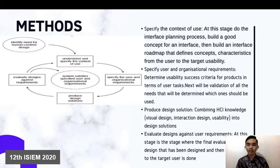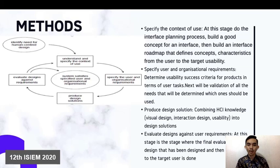Next, validation of all identified needs will be determined. The third step is the product design solution, which combines HCI knowledge, visual design, interaction design, and usability into an additional solution. This step focuses on designing the form of the application prototype simulation with the aim of providing a solution.